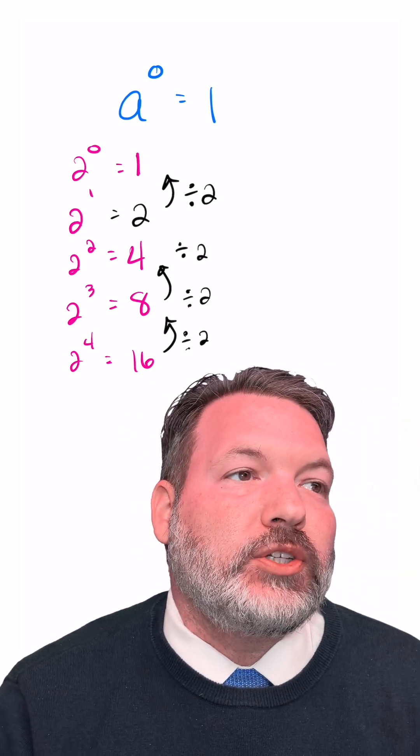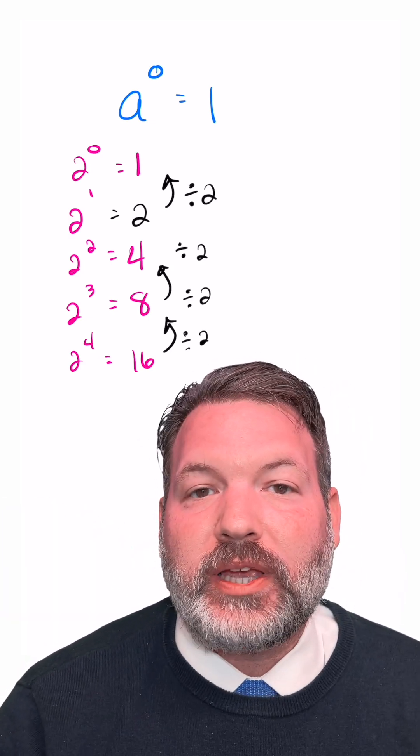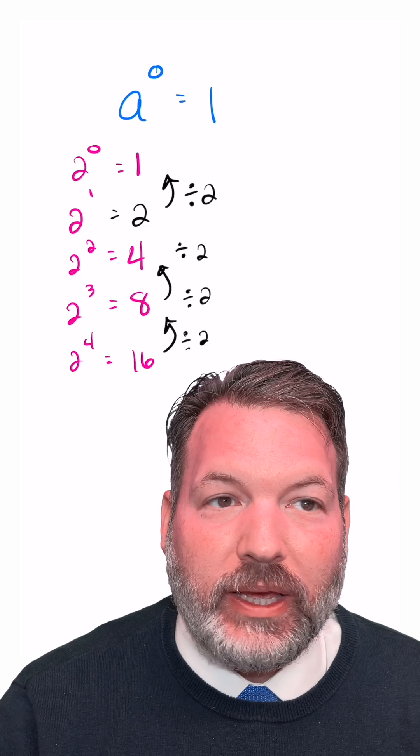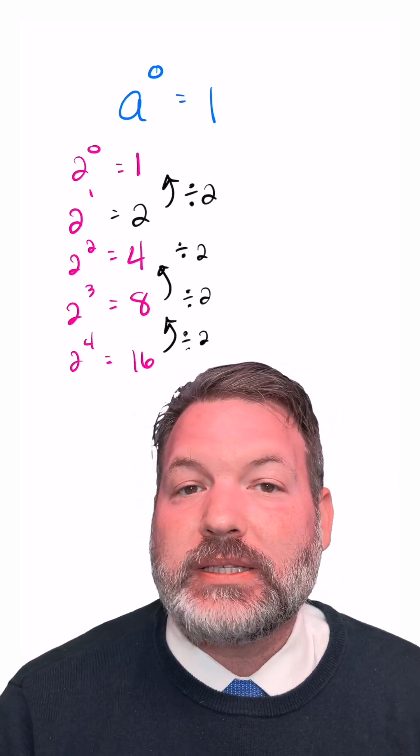This is why in general, it's good to let things to the 0 power be 1. What you can imagine we're actually saying when we say raise something to the 0 power is take that base and divide it by itself, and anything divided by itself is 1.